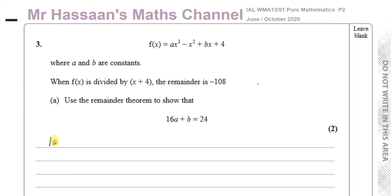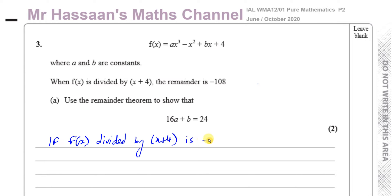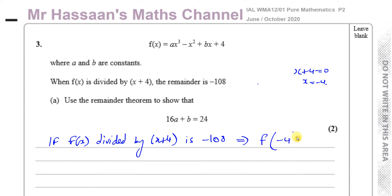If f(x) divided by x plus four gives a remainder of minus 108, that means f of whatever makes this bracket zero — so if x plus four equals zero, x equals minus four — then f(minus four) will be equal to minus 108. That's how you set it up.